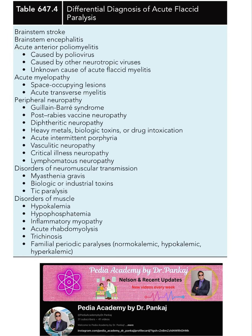Differential diagnosis of acute flaccid paralysis in children — very important. Welcome to PDA Academy by Dr. Pankaj. If brain stem stroke is present, we can get this picture. Brain stem encephalitis — anything affecting the brain stem can cause acute flaccid paralysis. Another important cause is acute anterior poliomyelitis, which was a common cause in the previous era.